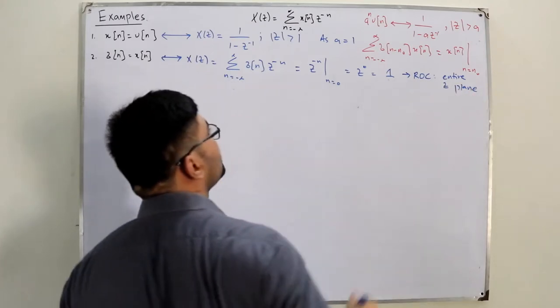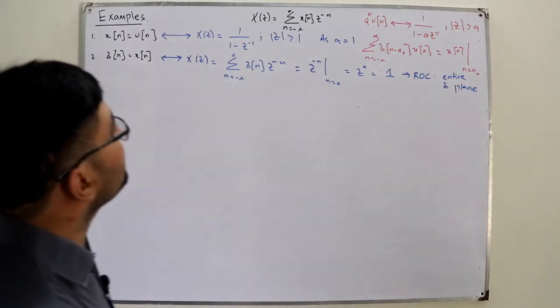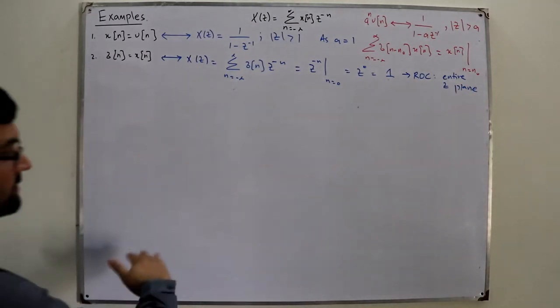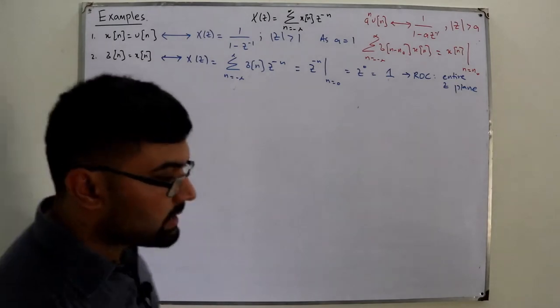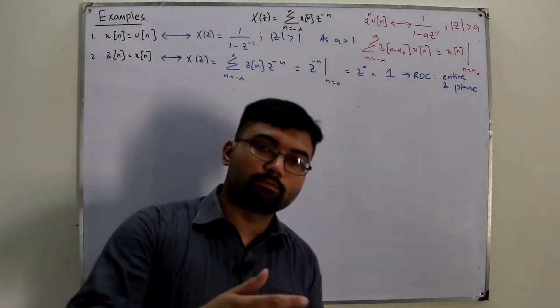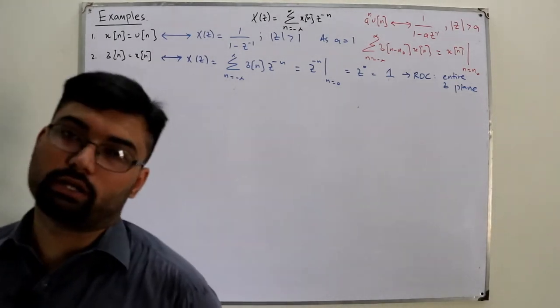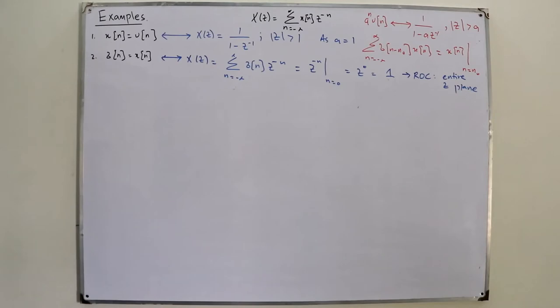So the impulse has Z-transform equal to 1. The corresponding ROC is the entire z-plane — including 0 and infinity — because the result is independent of the value of z.